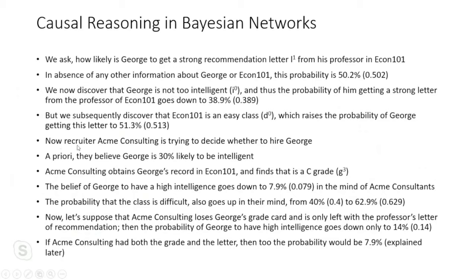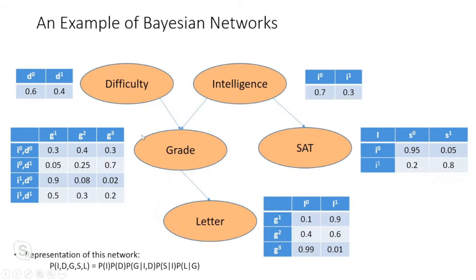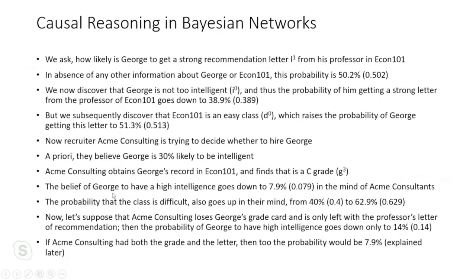A recruiter at Acme Consulting initially believes George has 30% probability of high intelligence — matching the prior. They obtain George's grade in Econ 101 and it's G₃ (poor grade). This crashes the estimated intelligence — the probability of high intelligence drops significantly. It also raises the probability of the class being difficult: from 40% up to 62.9%.